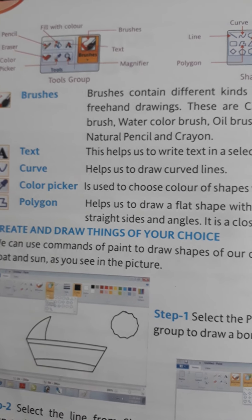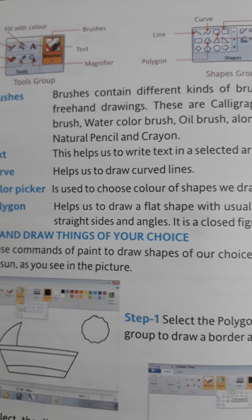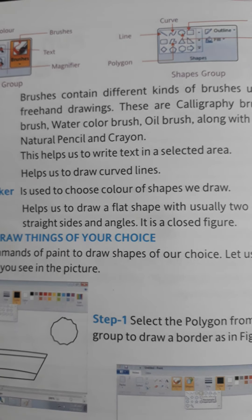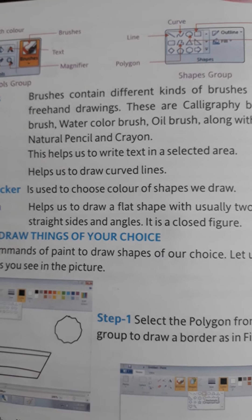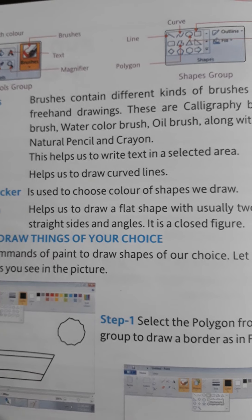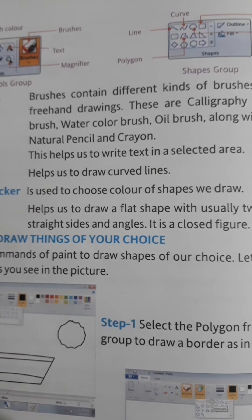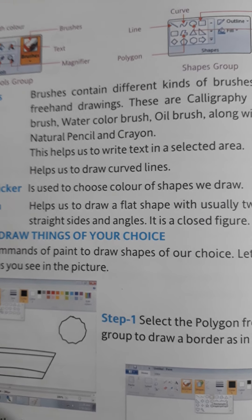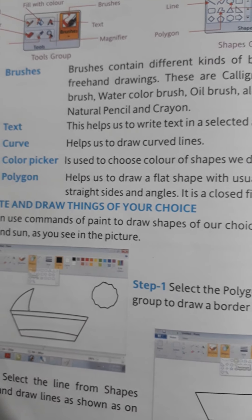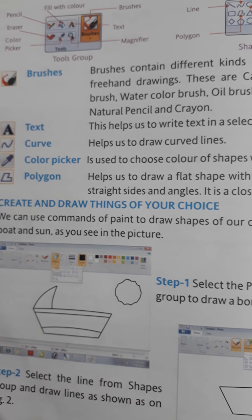Next is the Text tool. This helps us to write text in a selected area. The Text tool is used to write anything on a drawing — for example, if you want to write the name of a drawing, we can use the Text tool.